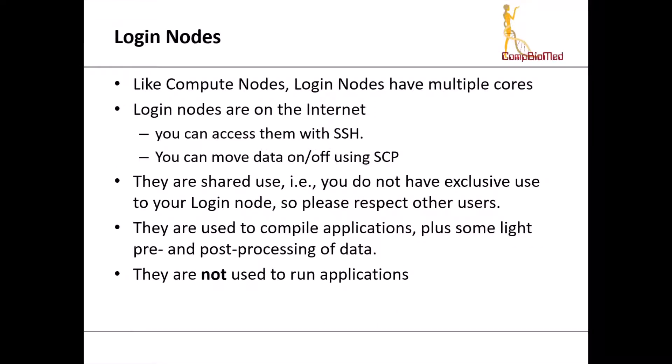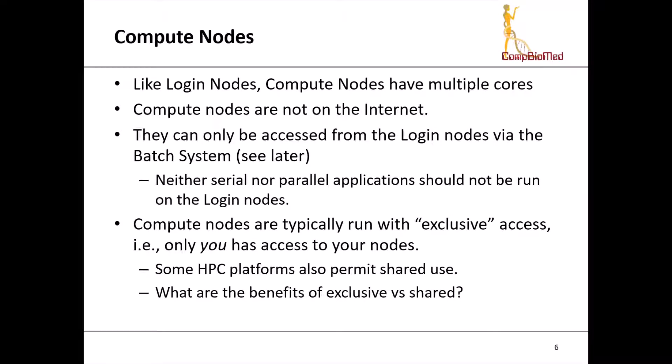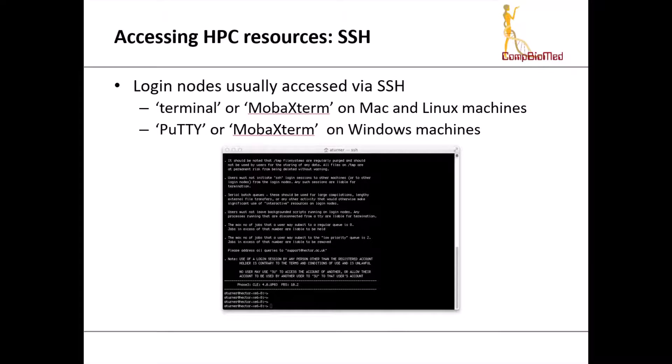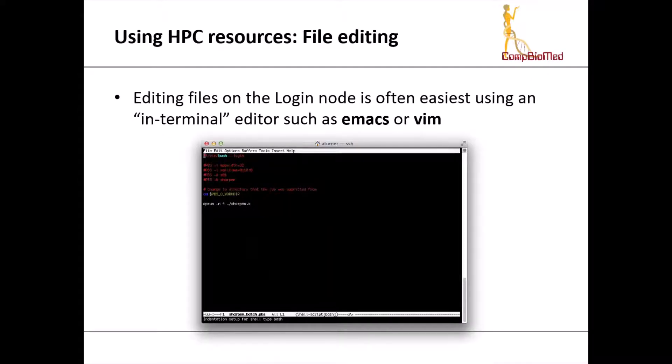Accessing the login nodes is usually done via SSH. If you're on a Mac or a Linux machine, there's the command terminal, or there's an application called MobaXterm. On Windows machine, you have applications like PuTTY, which is quite a traditional one. MobaXterm is also available on Windows machines. MobaXterm can help with setting up port forwarding and graphics and other more complicated things. When you're on the HPC system, you'll have to edit a file. This is typically done using either Emacs or Vim. These are two editors available on traditional HPC resources.